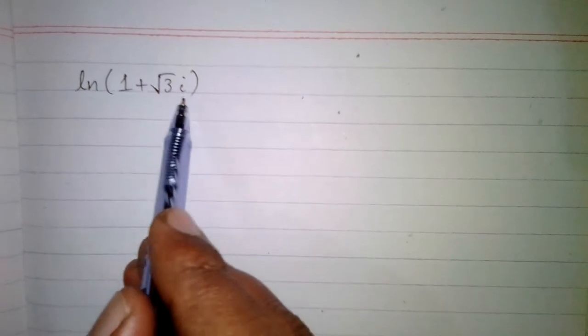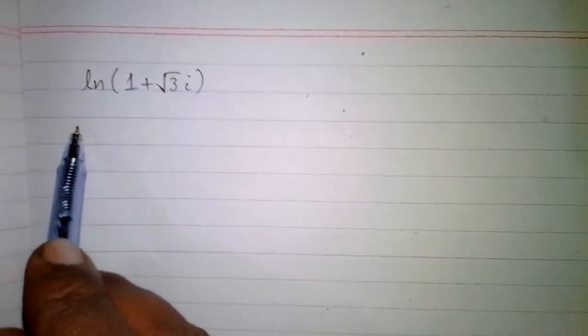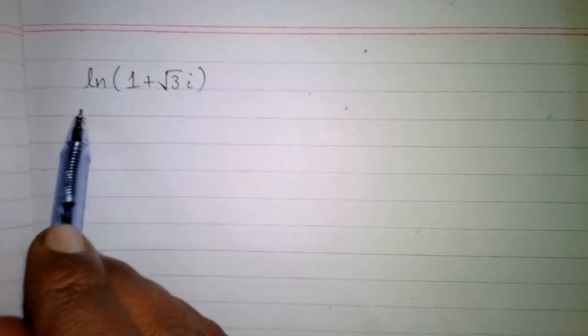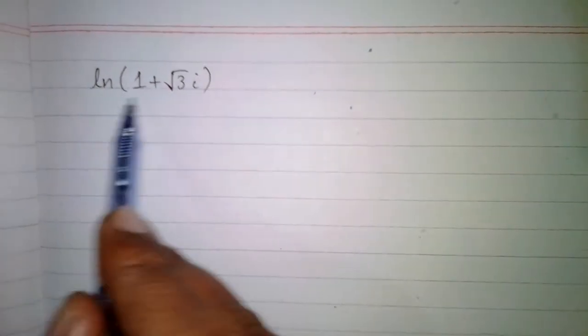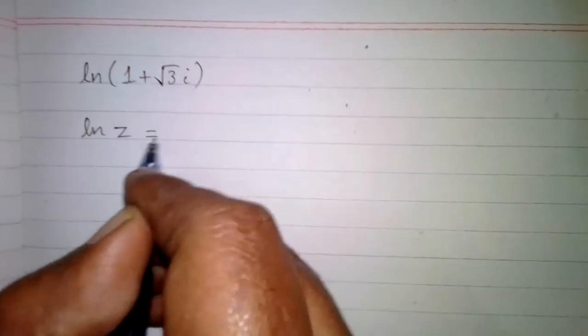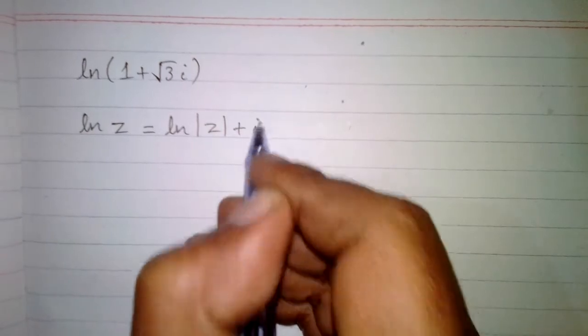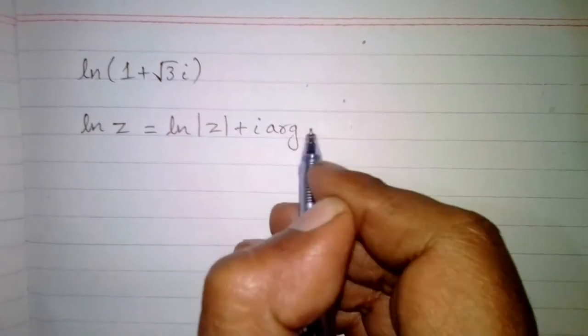In this video we are going to evaluate the natural log of 1 plus root 3 iota, or ln of 1 plus root 3 iota. Here we are going to find out the natural log of a complex number. The formula is: ln of z, where z is any complex number, is equal to ln of the modulus of z plus iota times the argument of z.